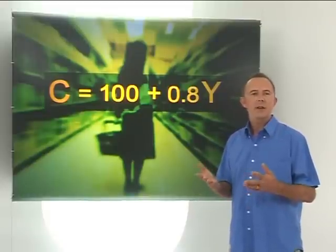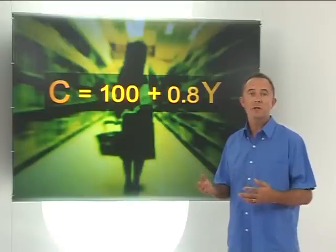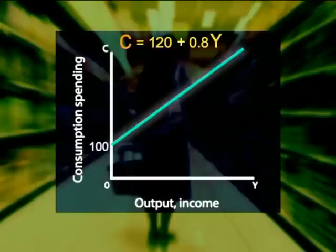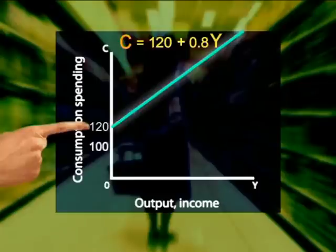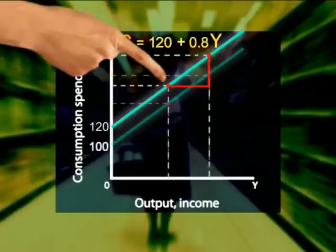Now what if some of these values change? What happens if autonomous consumption changes from 100 to 120? Autonomous consumption spending is higher, and so the vertical intercept will be higher. At every income level, total consumption spending is now higher than before. This is indicated by an upward shift of the consumption spending curve by a value of 20. Now note that the slope hasn't changed. Our marginal propensity to consume is still the same as before. An increase in autonomous consumption spending therefore shifts the consumption curve upwards.